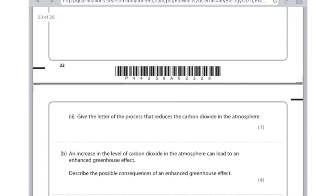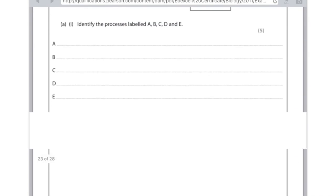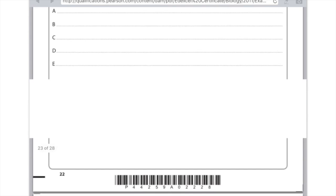Part 2. Give the letter of the process that reduces the carbon dioxide in the atmosphere. It's the process which takes in CO2. So that's going to have to be the plants photosynthesizing. Remember which one? That was C. So make sure you state the letter rather than writing photosynthesis.